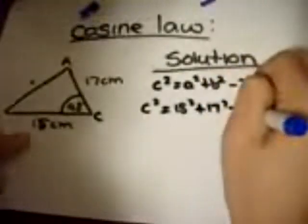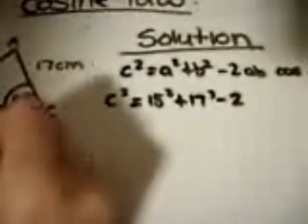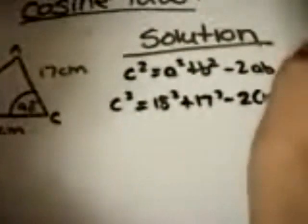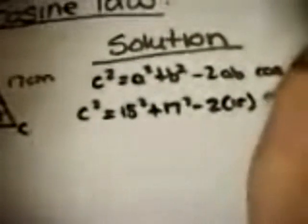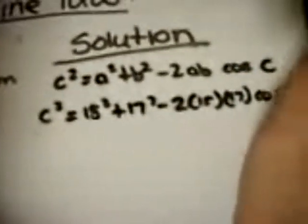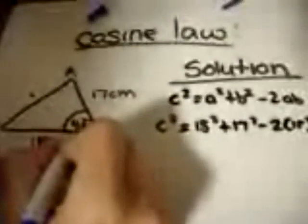Minus 2 side A, side B, which is 15 and 17 cosine 43 since we know the angle.